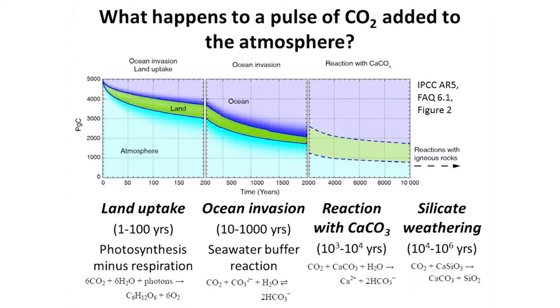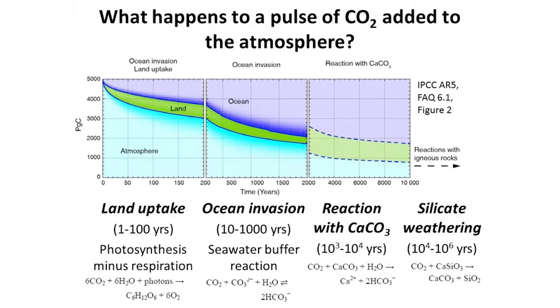What happens to a pulse of CO2 added to the atmosphere? This shows a simulation where you add a large pulse of CO2: in the first 100 years about 60 percent is taken up by the oceans and by the land. Then over the next 2,000 years the ocean uptakes more as ocean chemistry allows more CO2 uptake, but even after 2,000 years you still have 40 percent of the CO2 left in the atmosphere. Then slowly, on a timescale of 10,000 to a million years, you finally lose the CO2 from the system. Once you put carbon into the atmosphere, it takes a long, long time to go away.